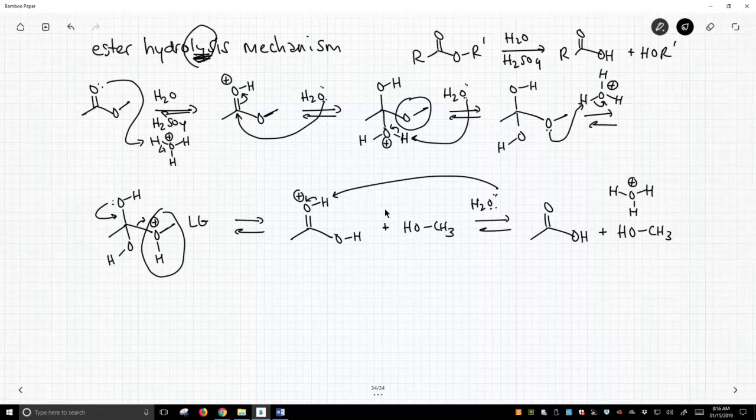If it runs backwards, if we remove water in the reaction, we'll run it backwards, and we'll form an ester from our acid. So, we call this Fischer esterification. We do the Fischer if we run it backwards.